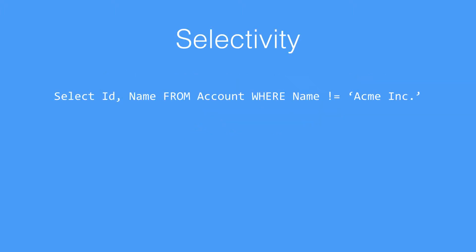If we have a look at an example, let's say we've got the following query where we're selecting the ID and the name from the account object, where the name is not equal to a particular value — so Acme Inc. Name is an index field, so we are using an index field in our filter. However, the problem we have here is that we're using NOT EQUALS. The NOT EQUALS filter is actually a non-selective filter. To find all of the records within that table that are not equal to a certain value, we have to scan the entire table and return all of those rows. That's a non-selective query.